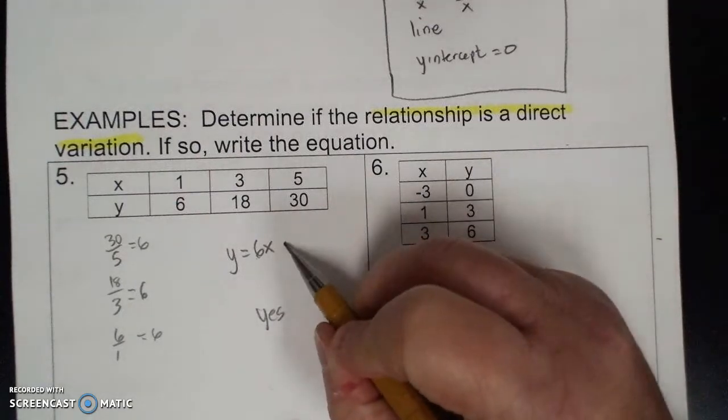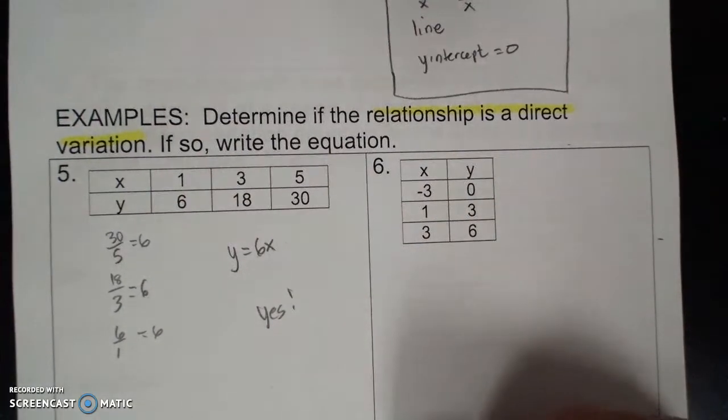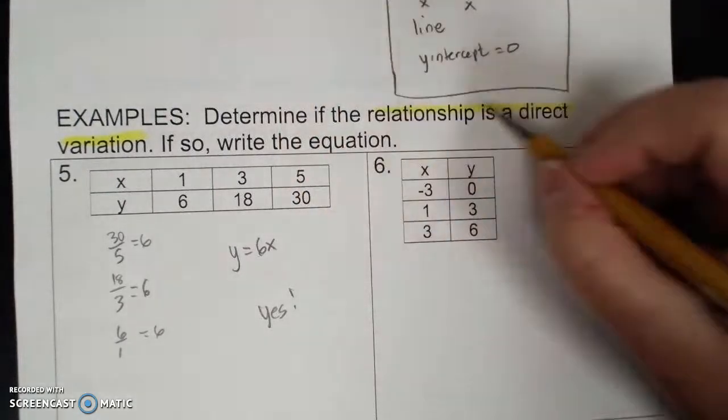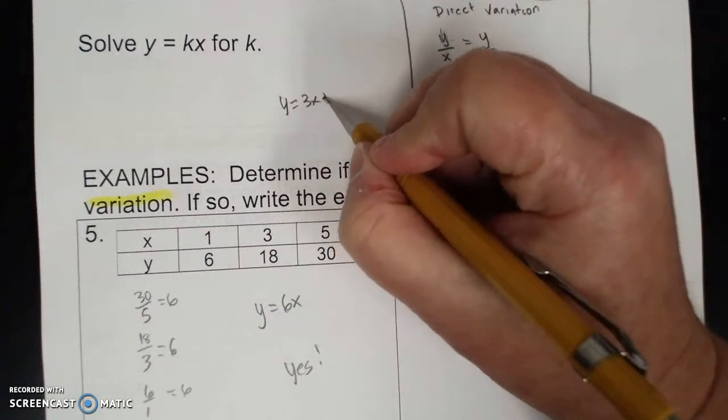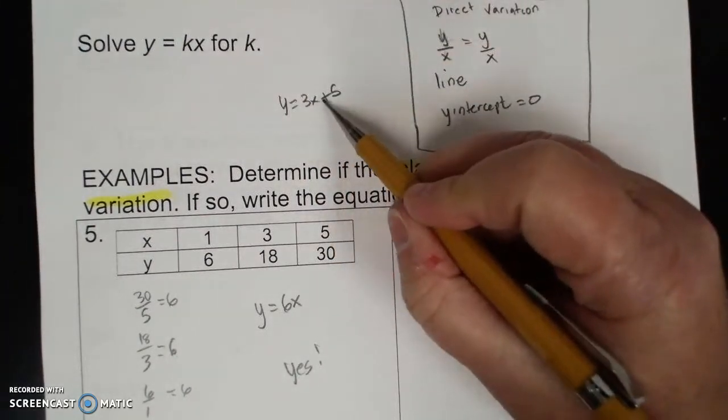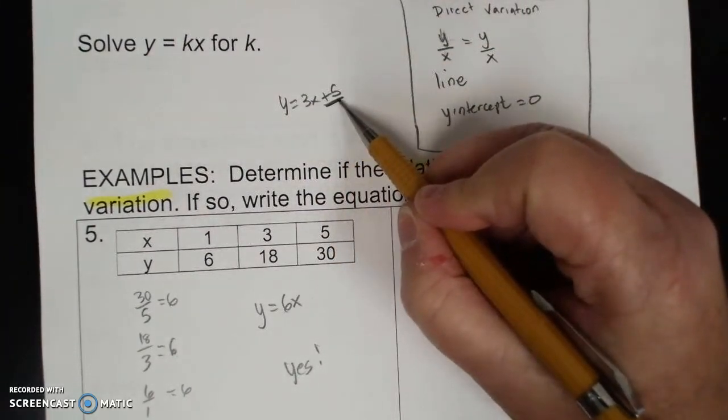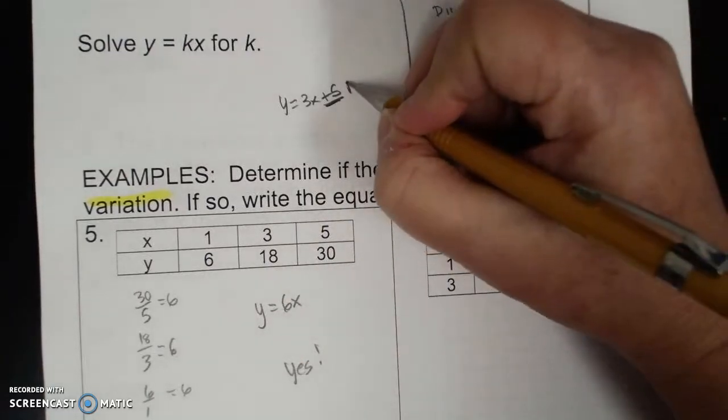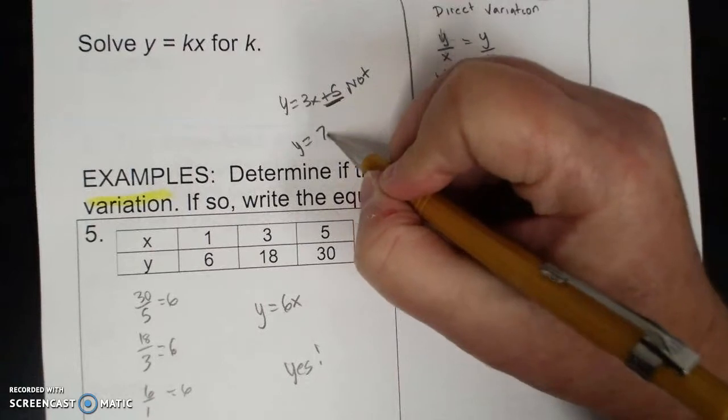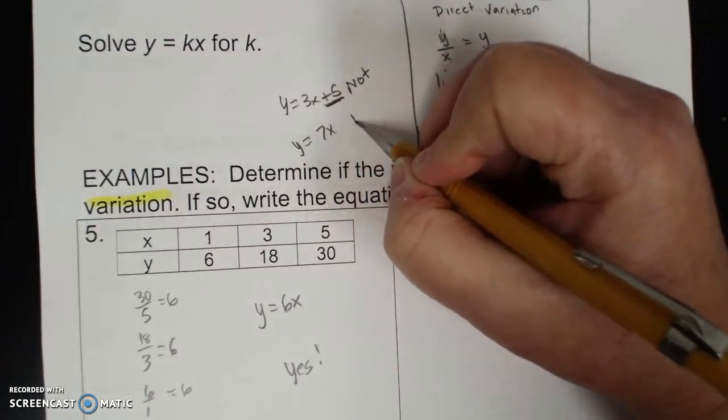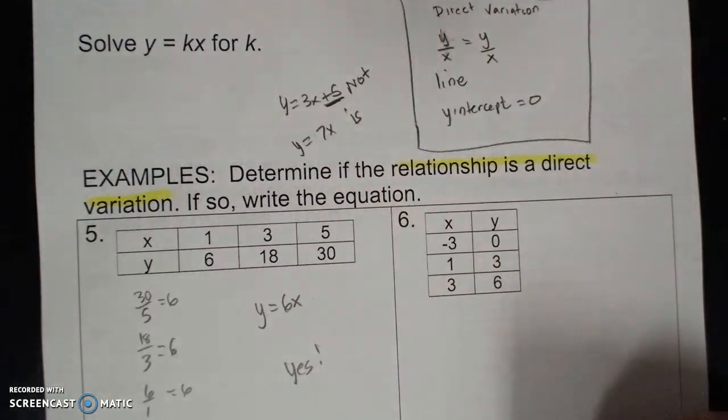And you have a plus 0 right here, so yes. So the other thing is, if you have y = 3x + 5, you know that the y-intercept isn't 0, so that's not a direct variation. But if you have y = 7x, that is a direct variation.